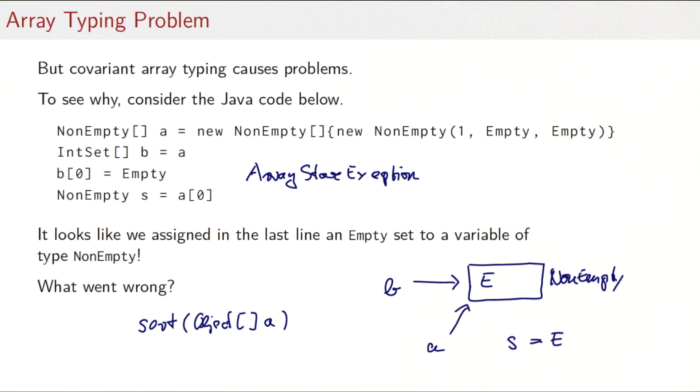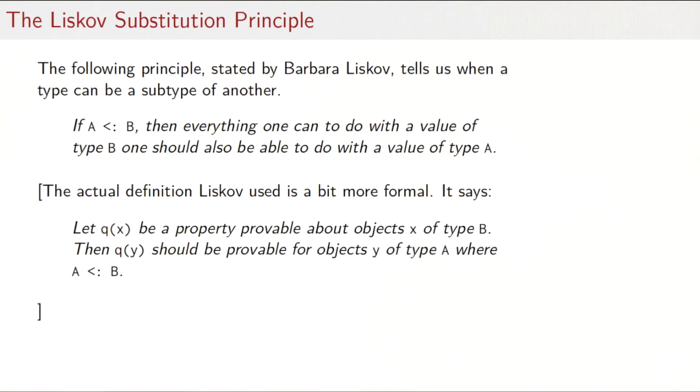Now, can we somehow generalize what we've learned here? When does it make sense for a type to be a subtype of another, and when should that rather not be the case? There's actually an important principle, stated first by Barbara Liskov, that tells us when a type can be a subtype of another. Essentially, what it says is, if A is a subtype of B, then everything one can do with a value of type B, one should also be able to do with a value of type A. So we have the type B, that's a supertype. The type A is a subtype. And we say, if we expect that we can do something with B's, then we should be able to substitute an A for a B, and we can still do the same thing with an A.